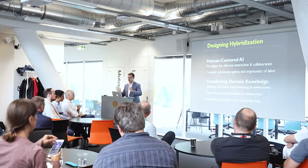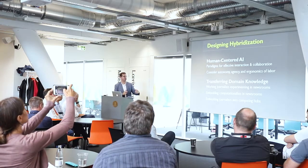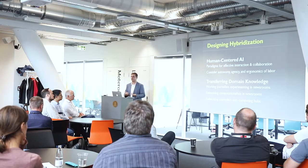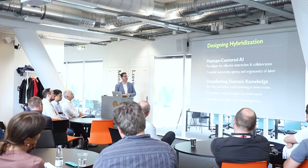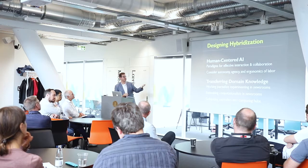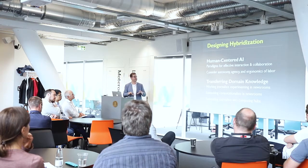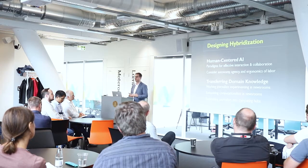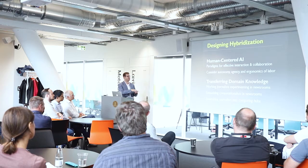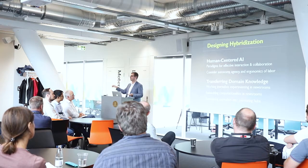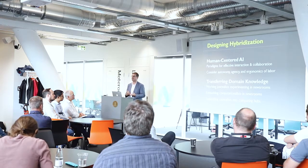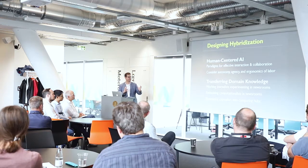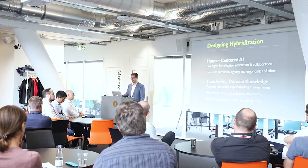We also need to think about how to transfer domain knowledge from journalism into technology. You can imagine having journalists who know how to program embedded in newsrooms, or embedding technologists in newsrooms so they're surrounded by domain knowledge to understand existing workflows and how new technology could fit into them. We can also imagine taking journalists with domain knowledge of media production and putting them into computing hubs, surrounded by people with more advanced technological training — different models for ensuring good cross-flow of domain knowledge between journalists and computationalists.